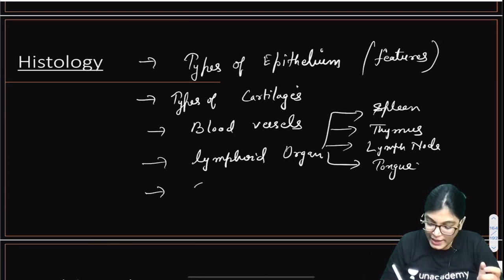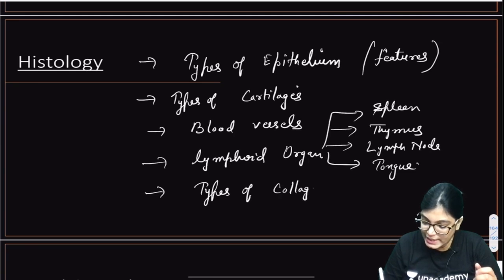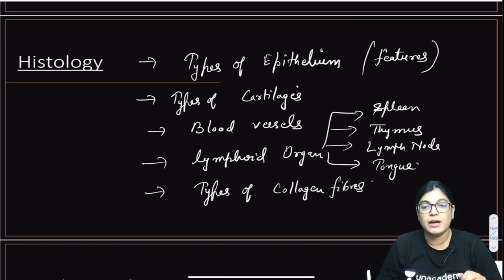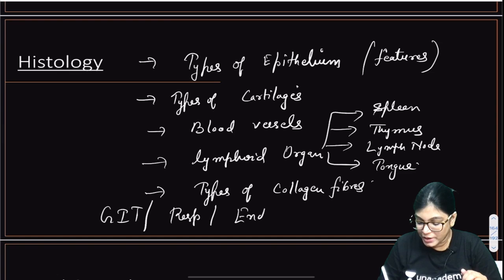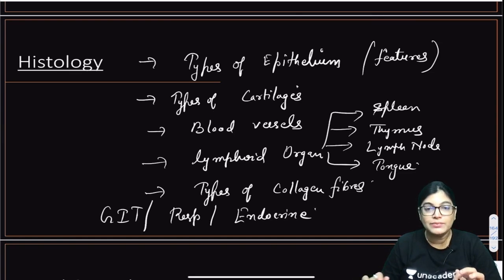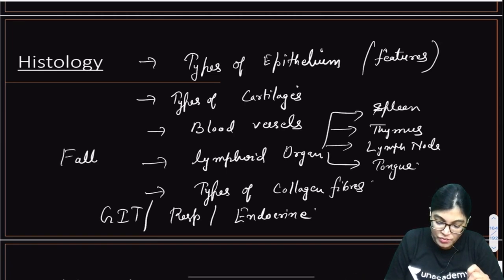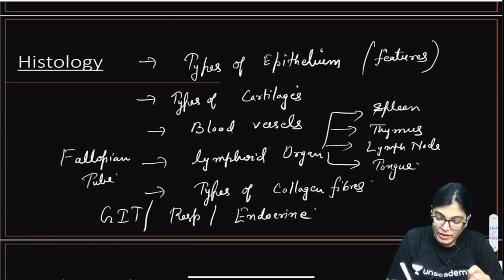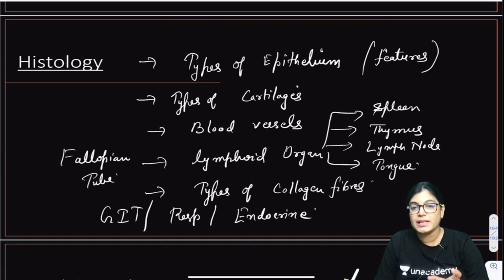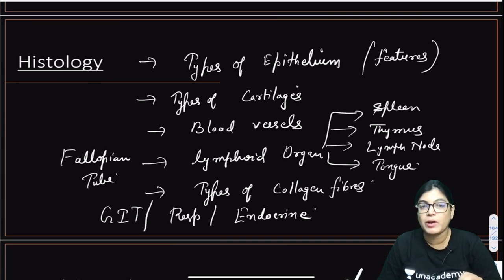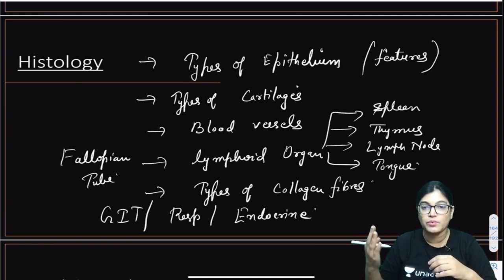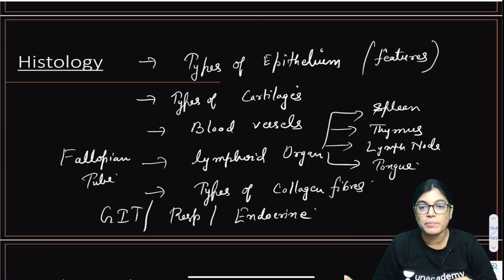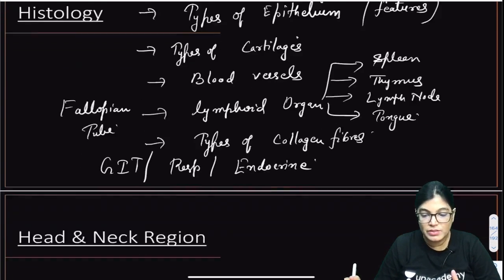Types of collagen fibers have also been asked in exams. General histology is more important but systemic histology — GI slides, respiratory slides, endocrine slides like thyroid — will also come. Important systemic slides include fallopian tube identification points. You don't need to know every detail, but three to five identification points per slide are needed, as image-based questions will come. These are the important topics of histology.